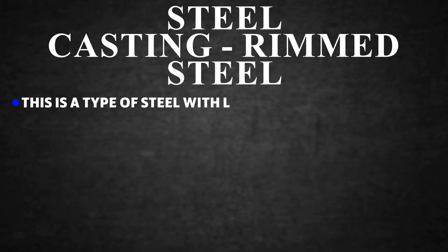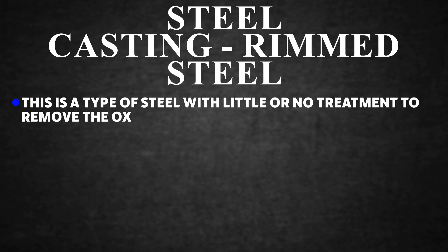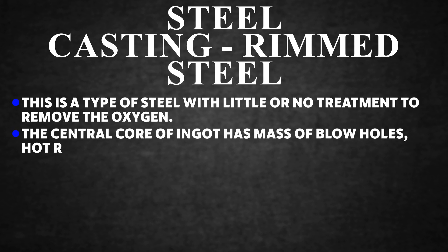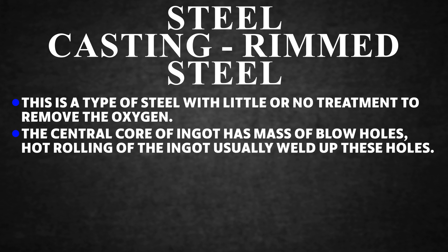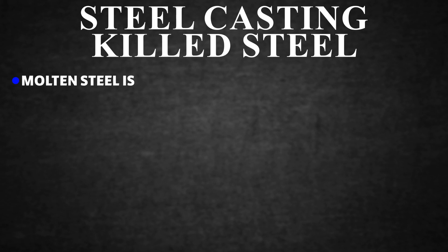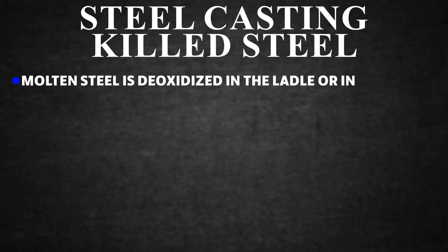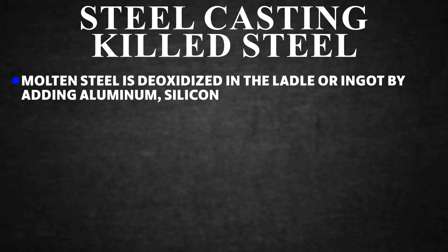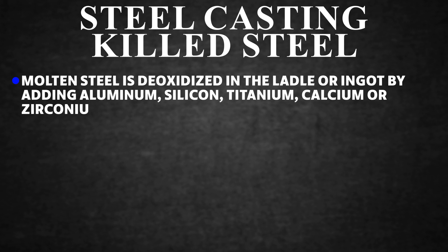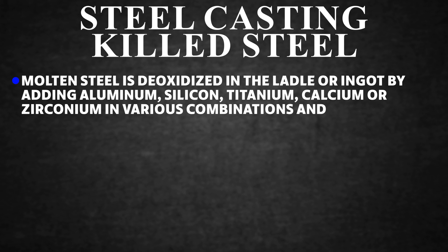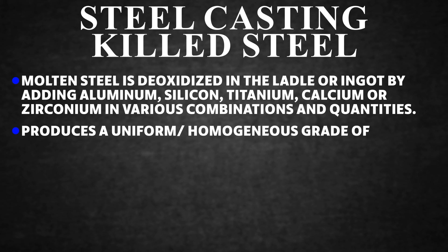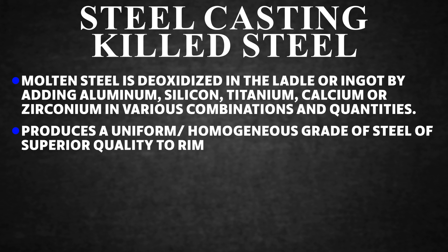Rimmed steel is a type of steel with little or no treatment to remove oxygen. The central core of the ingot has massive blowholes; hot rolling of the ingot usually welds up these holes. Killed steel: molten steel is deoxidized in the ladle or ingot by adding aluminium, silicon, titanium, calcium, or zirconium in various combinations and quantities, producing a uniform, homogeneous grade of steel of superior quality to rimmed steel.